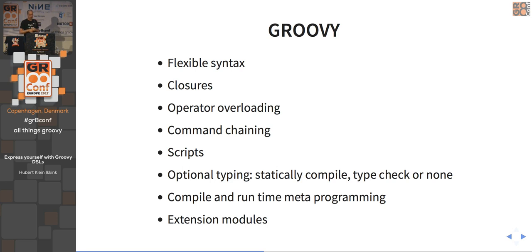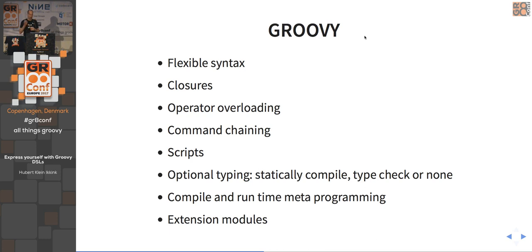Groovy also allows you to run scripts from a Java application. You can have an external script saved on the file system, in a database, or elsewhere, read it and execute it without changing the actual application code. Groovy's typing is optional — everything is typed but you can use the def keyword. Nowadays you can also use @CompileStatic annotations and @TypeChecked annotations. You can even write custom type-checking extensions to support your DSL at compile time — the Groovy in Action second edition book has a good example of that.